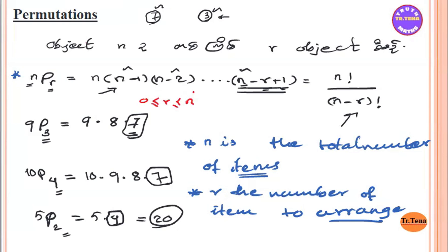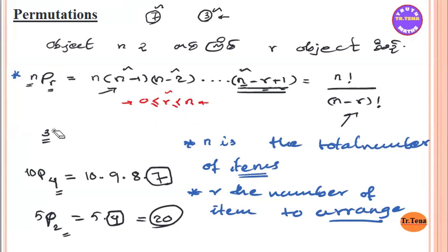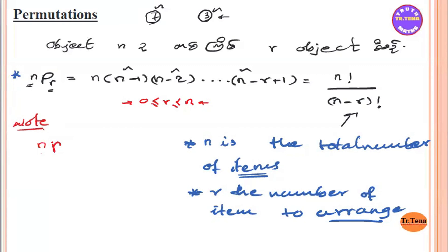If n is equal to r, then nPn equals n factorial. So nPn equals n factorial divided by n minus n factorial, which is n factorial divided by 0 factorial. We will see the result of this example.